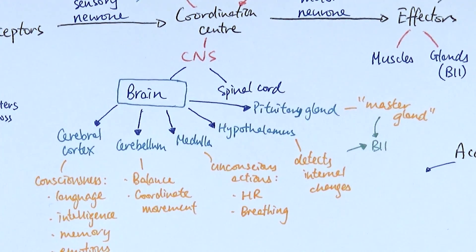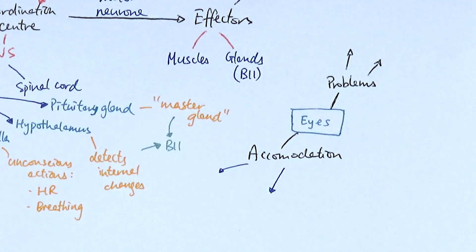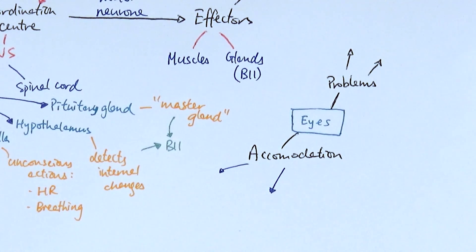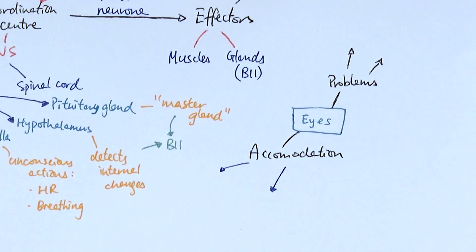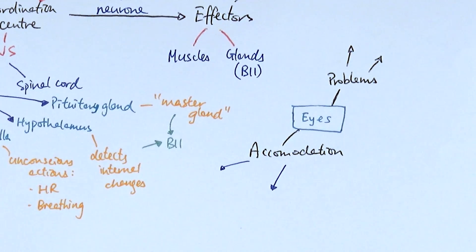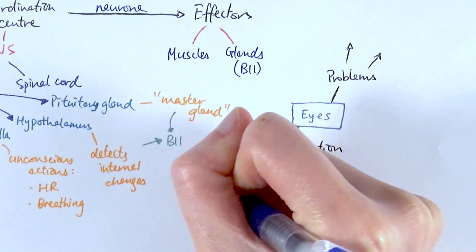You'll also need to know about brain surgery and how it's used to understand how the brain works, but that requires more detail on your own. For the eyes, you need to know the structure and something called accommodation — how our eyes change to allow us to see things nearby or far away — plus problems with the eyes and treatments. Two key structures for accommodation are the ciliary muscles and the suspensory ligament.